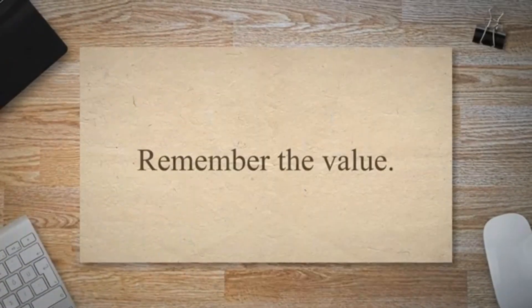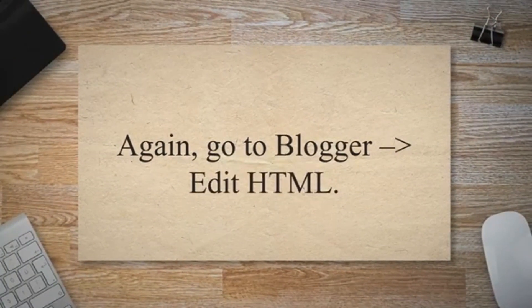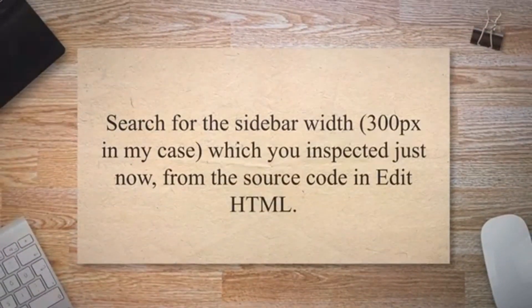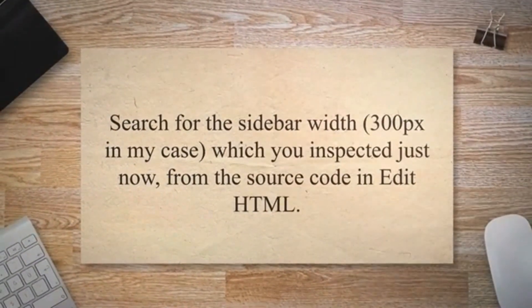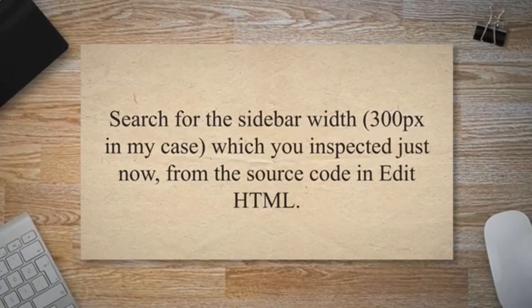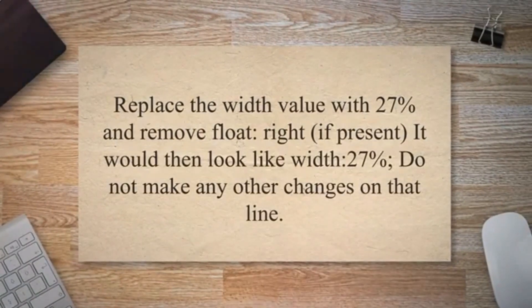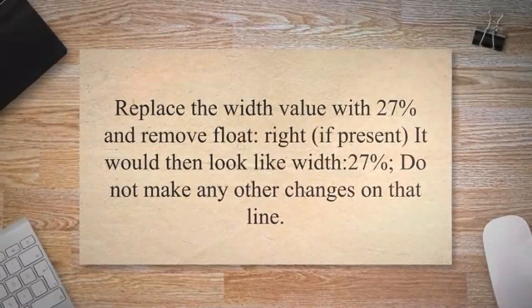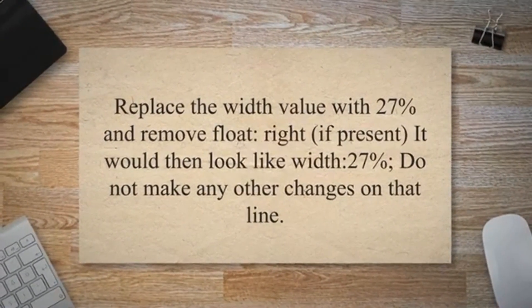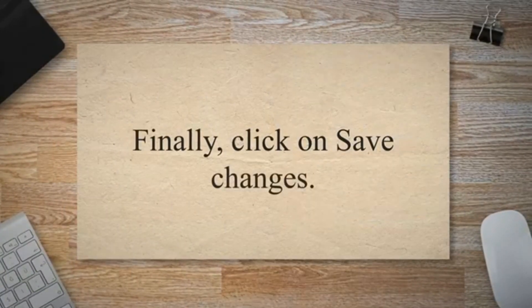In my case the sidebar width is 300px — remember that value. Go back to Blogger Edit HTML and search for the sidebar width (300px in my case) which you just inspected from the source code. Replace the width value with 27%, and remove float: right if present. It would then look like: width: 27%;. Do not make any other changes on that line. Finally, click on Save Changes.